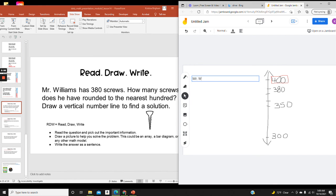Mr. Williams has about 400 screws. I know this because 380 is more than halfway between 300 and 400. I can round 380 up to 400, period. There's my answer.